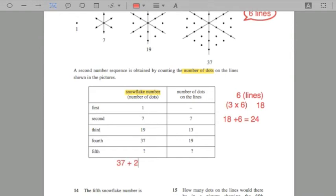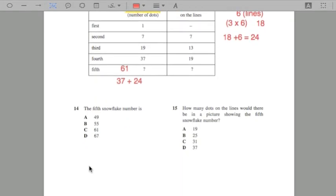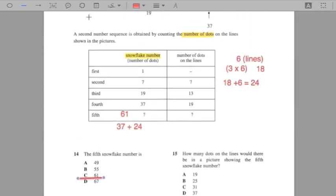37 plus 24, which is 61. See? And there's your answer. 61 is the answer. Can you see how we've gotten that?